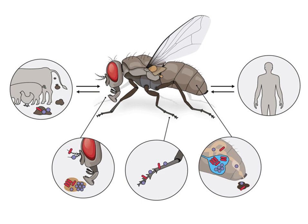This slide clearly shows how disease-causing agents or pathogens are carried and transferred from one place to another, so that animals and human beings are affected and the pathogen enters into the body. In this way, more than 100 different kinds of pathogens are transmitted from one individual to another, and this is how the housefly acts as one of the important mechanical vectors.